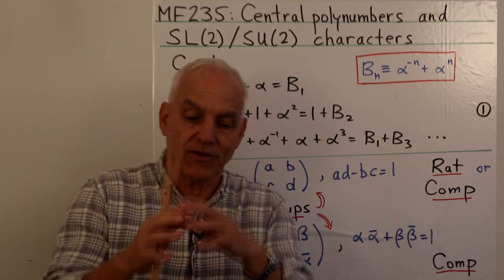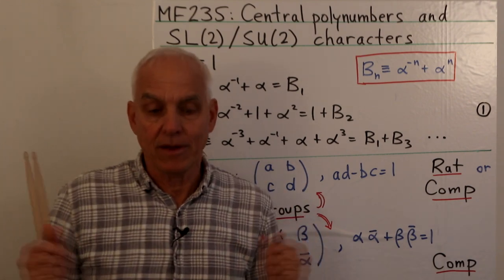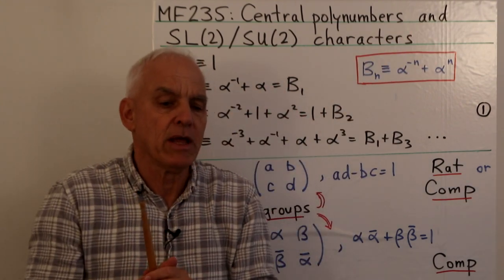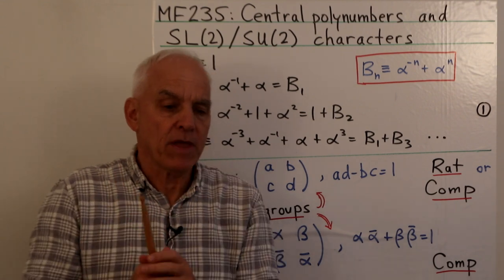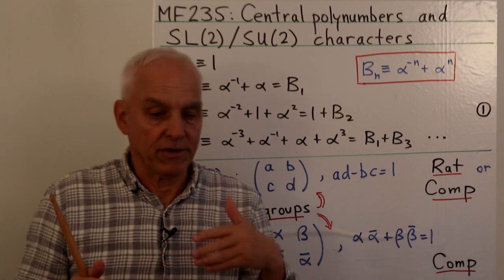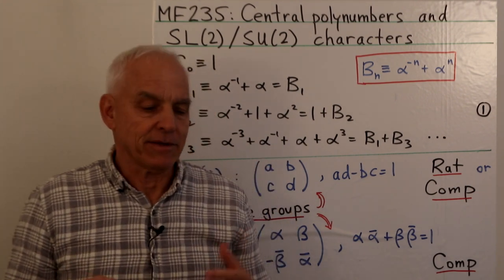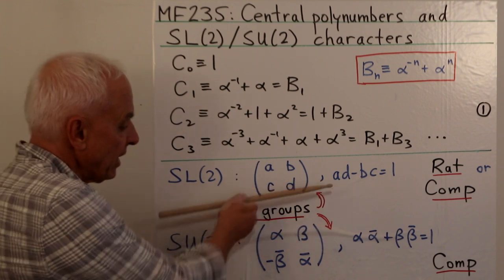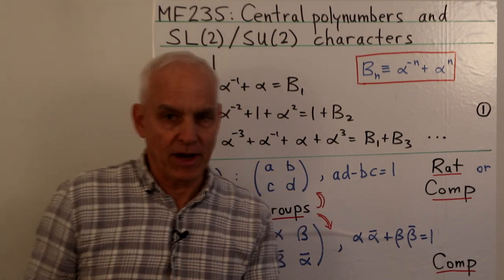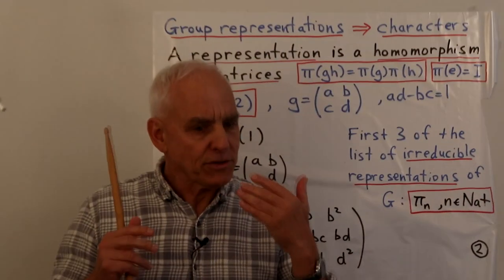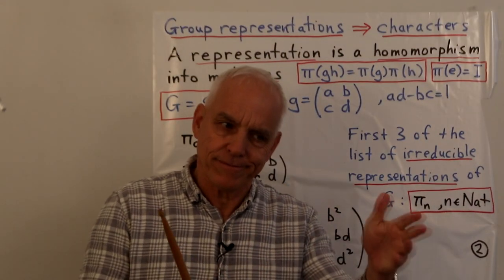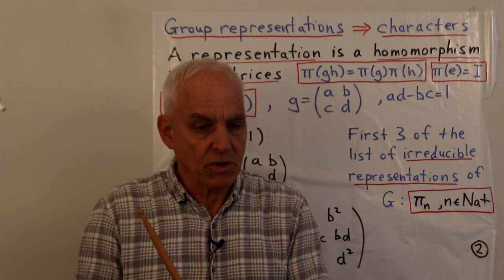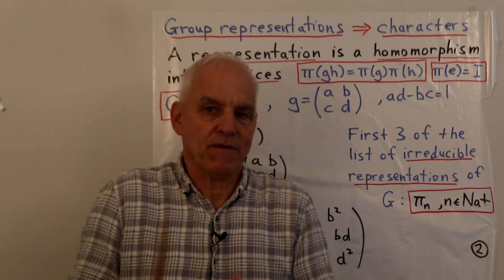SU2 has an alternate aspect as the three-sphere — the three-dimensional sphere in four-dimensional space. It's a compact Lie group: bounded, completely contained in some finite region of space. This is a very important group having to do with spherical harmonics, the hydrogen atom, and of course the Standard Model. These groups are closely connected, and we're going to be interested in representations of them. So I have to tell you what that means — introducing the idea of a representation and what associated characters are.